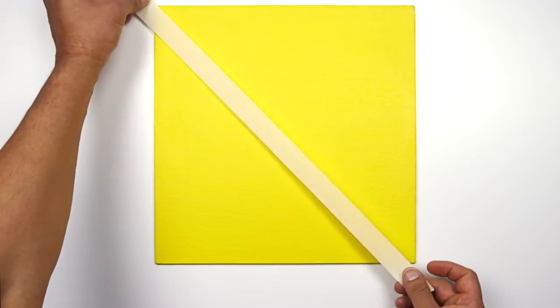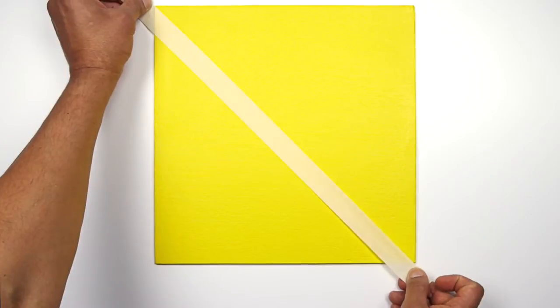In this example, I've used two layers of Winsor Newton professional acrylic. The more layers that you use, the more solid the color will be, but the main thing is to allow for the final layer to dry thoroughly before applying the masking tape.